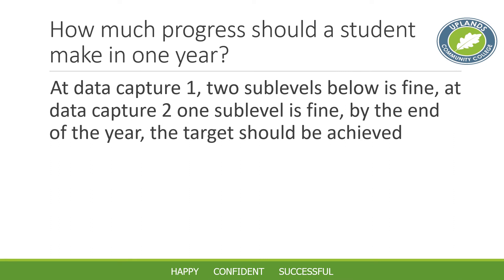We have three data captures in a normal year, and students make progress throughout the year — the targets are end-of-year. At data capture one, if you are two sub-levels away from your end-of-year target, that's considered fine. By the second data capture, usually mid-year, you need to be around one sub-level away. By the end of the year that target should be achieved, and if it has been, you are on track to make good progress.